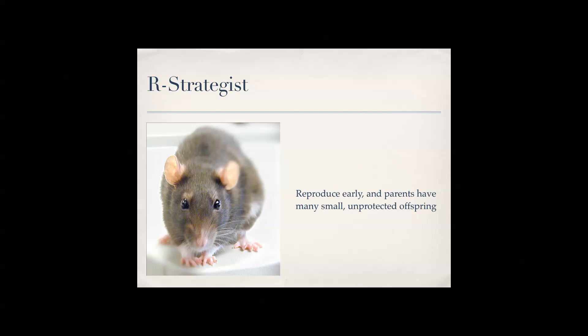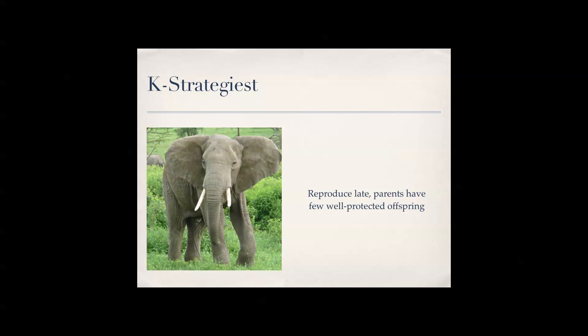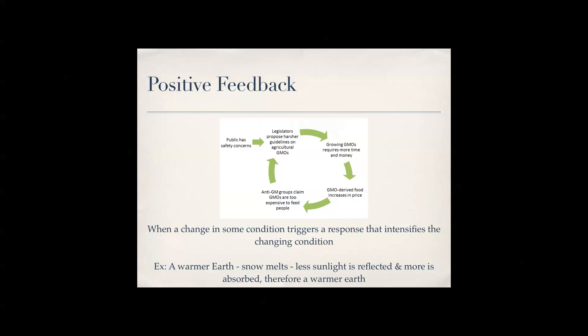R-strategists, like rats, reproduce early and parents have many small, unprotected offspring — the parents don't look after their children much. K-strategists, like elephants and humans, reproduce late, have few offspring, but they are well-protected. So think r-strategists for rats, and K-strategists for elephants and humans — reproduce late, parents have few well-protected offspring.